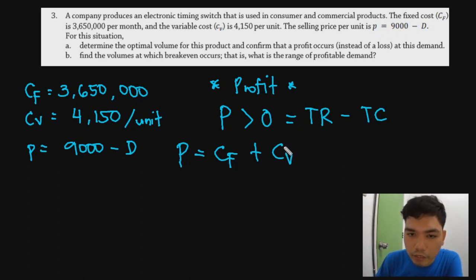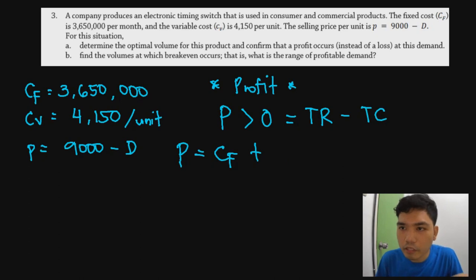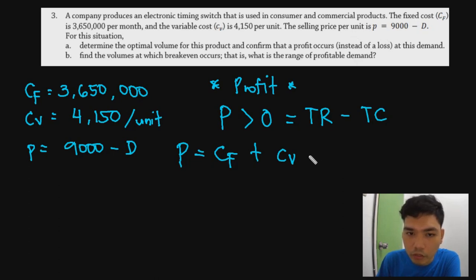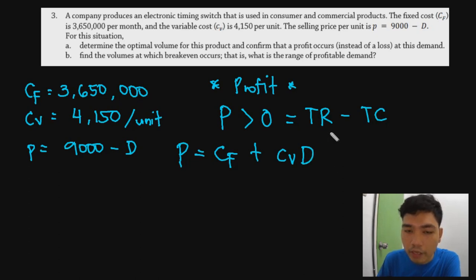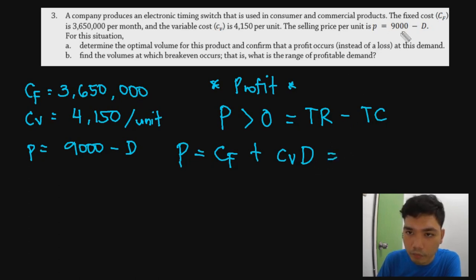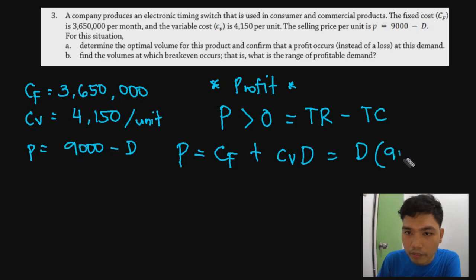The profit equation becomes: P equals D times (9,000 minus D) minus [3,650,000 plus 4,150D]. To find the optimal volume, we differentiate profit with respect to D and set equal to zero. Using the product rule: dP/dD equals 0 plus 4,150 equals D times (-1) plus (9,000 minus D) times 1.